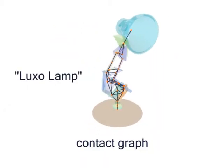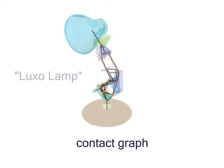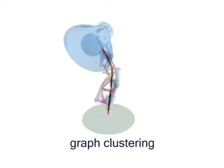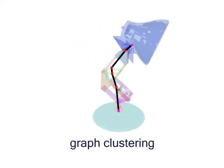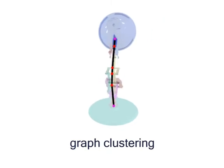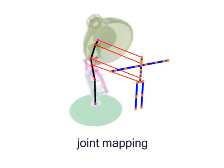This lamp example has a morphology that is quite difficult to match to a human animation skeleton. The system still finds a reasonable solution by mapping the upper part to the torso and the lower part to one of the legs.